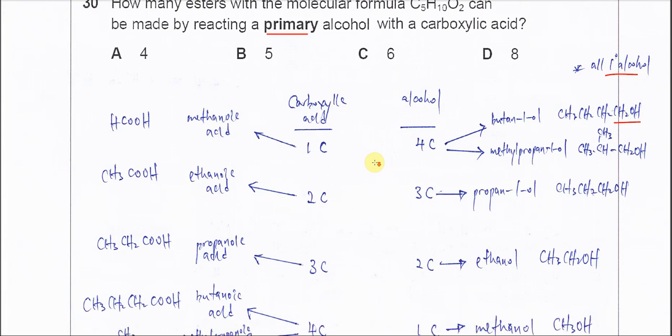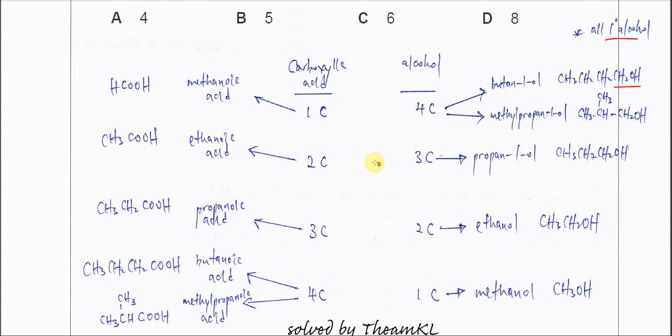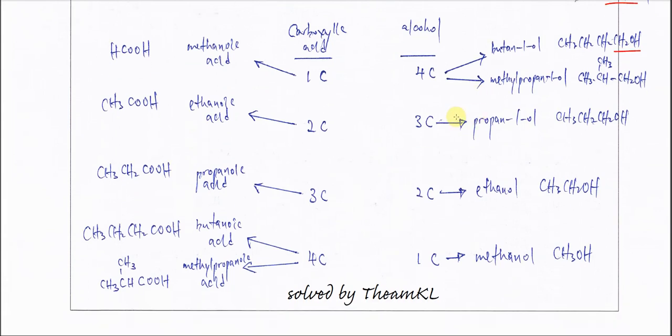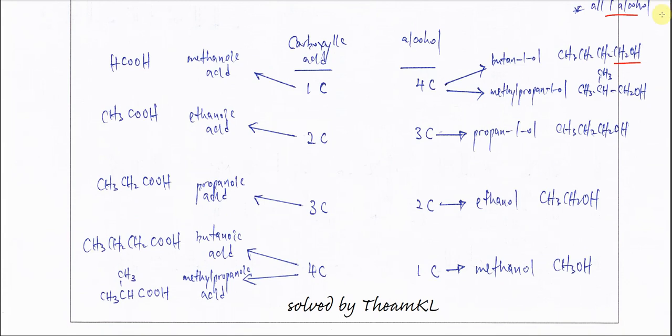Okay, so let's start. If we start with 4-carbon alcohol, for 4-carbon alcohol it can be butane-1-ol or methylpropane-1-ol. These two alcohols are primary alcohols so they can be used.